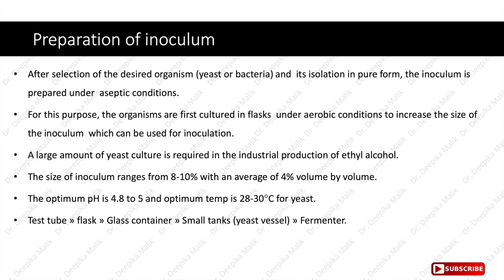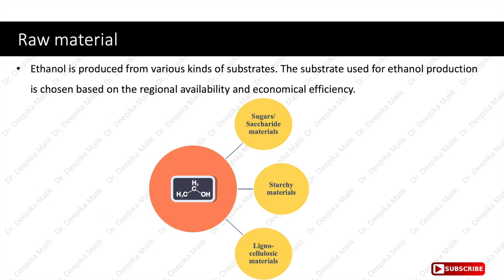What are the different raw materials used for ethanol production? Ethanol is produced from various kinds of substrates chosen based on regional availability and economical efficiency. Raw materials can be broadly classified into three categories. First, sugars or saccharide materials, which include sugarcane, sugar beet, molasses, sugar corn waste, sugar or cane sorghum, and some fruits.